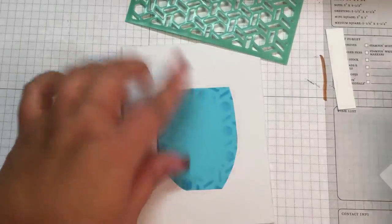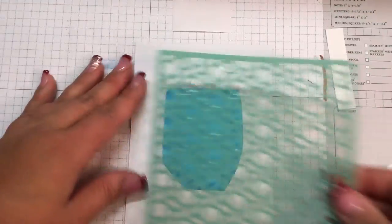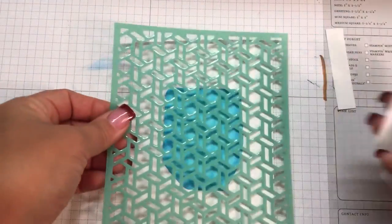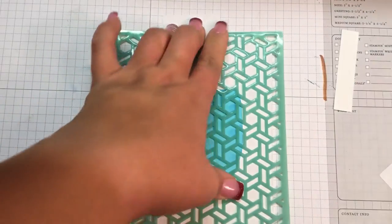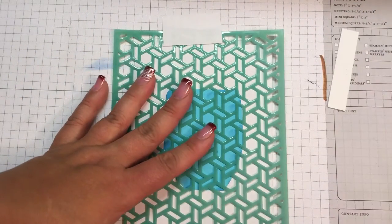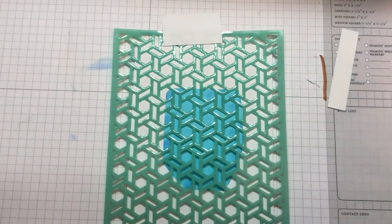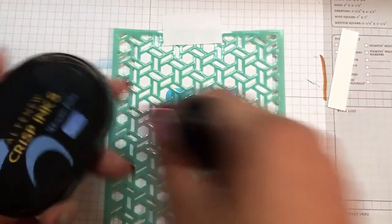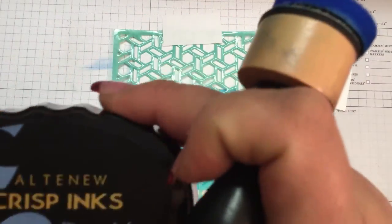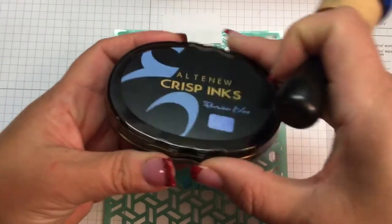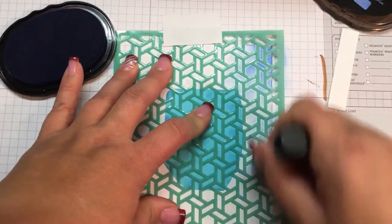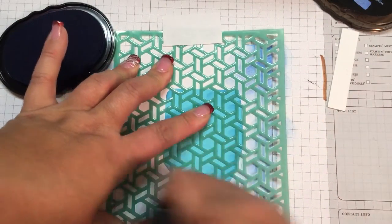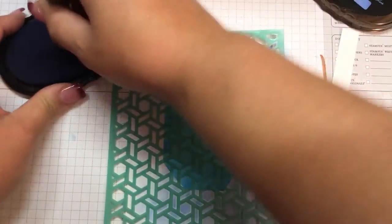The reason we do that is because when we stamp the image underneath, and you could stamp the image first if you wanted to, it doesn't really matter, we're just going to mask that off. I'm just using some Post-it tape to hold it down, and I am using the Altenew Persian Blue ink, I love this color, with the Tim Holtz blending tool. And again just blend in through the stencil.